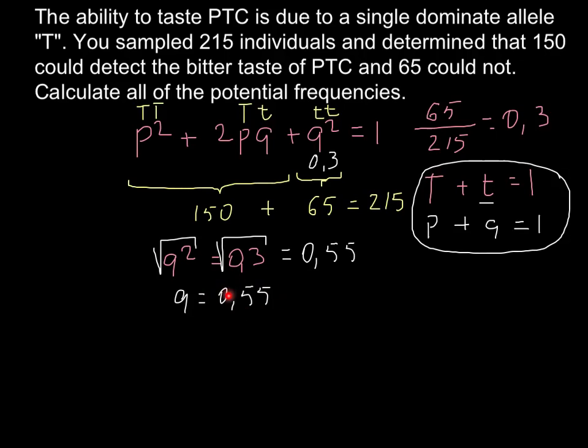Because we know that q here is 0.55, we can just rearrange our numbers here. So 1 minus q, and we are going to find p. So p equals to 1 minus 0.55. And this is going to be 0.45. So p equals to 0.45.